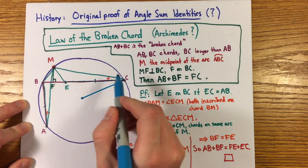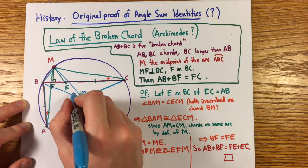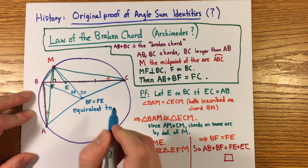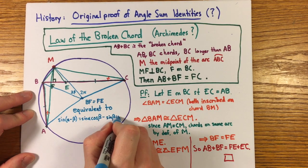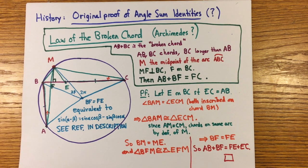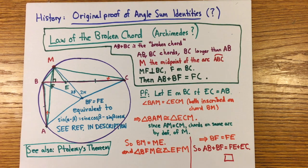This statement is actually equivalent to the angle difference formula for the sine. I'll leave a reference in the description if you want to see how it's the same. Also, you can look up what's called Ptolemy's theorem on quadrilaterals inscribed in a circle which also gives the angle sum identities.